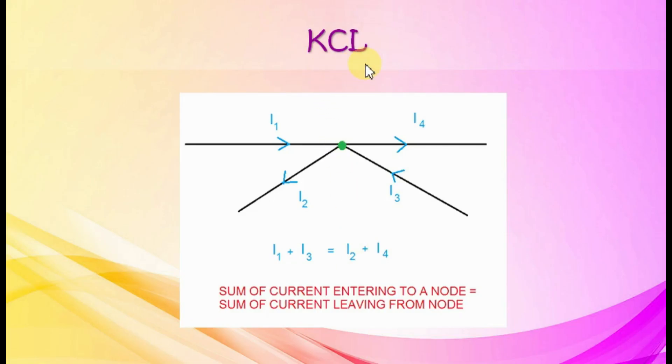Kirchhoff's Current Law: Sum of currents leaving a junction equals sum of currents entering a junction. In other words, the algebraic sum of all the currents entering and leaving a junction must be equal to zero.